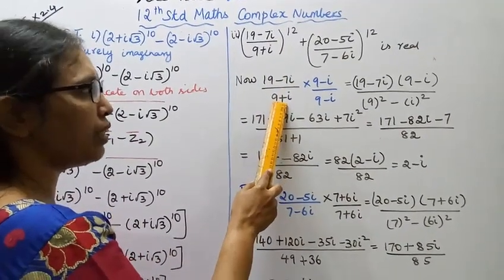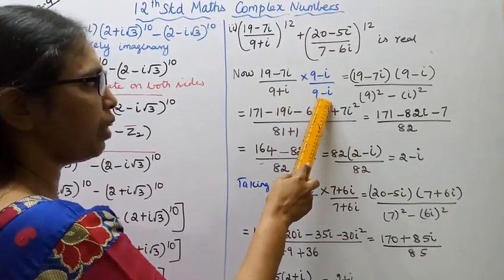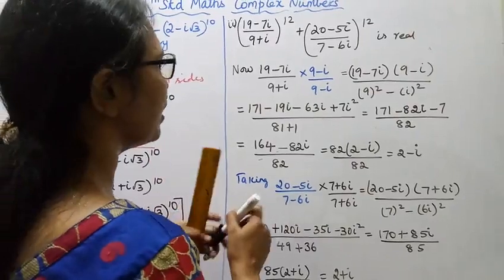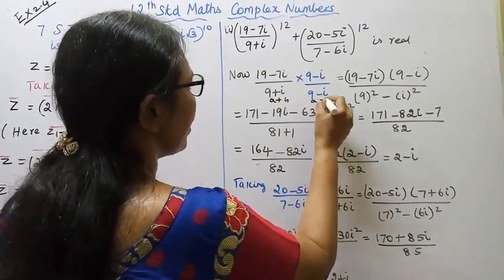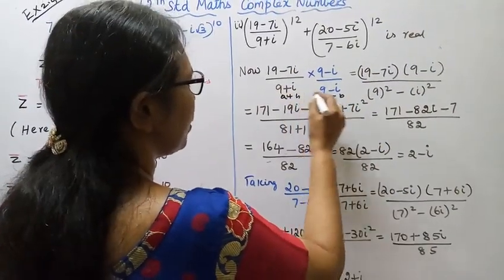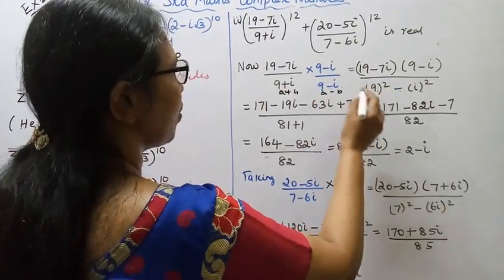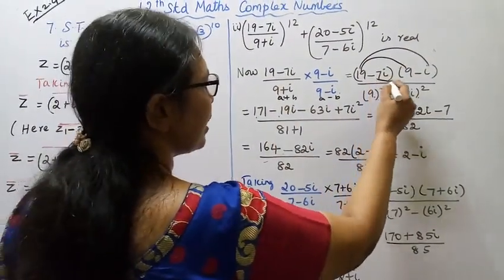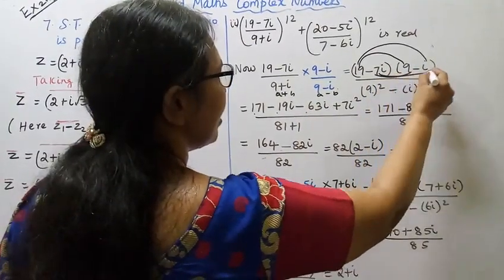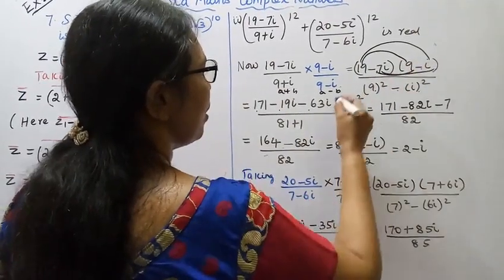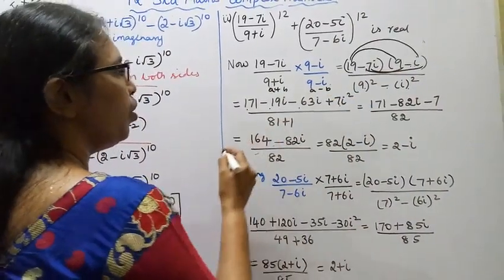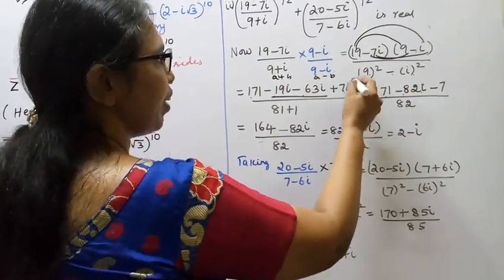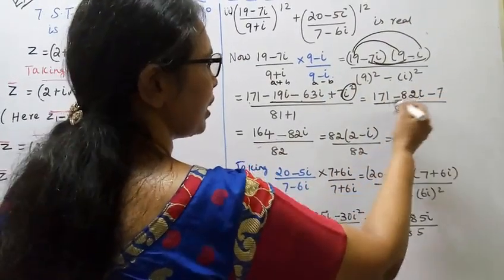Consider (19 − 7i) / (9 + i). Multiply and divide by the conjugate (9 − i). We get (19 − 7i)(9 − i) in the numerator: 171 − 19i − 63i + 7i². Since i² = −1, this gives 171 − 82i − 7 = 164 − 82i. Wait, let me recalculate: minus into minus is plus, 7i × i = 7i² = −7, giving 171 − 7 − 82i = 164 − 82i.